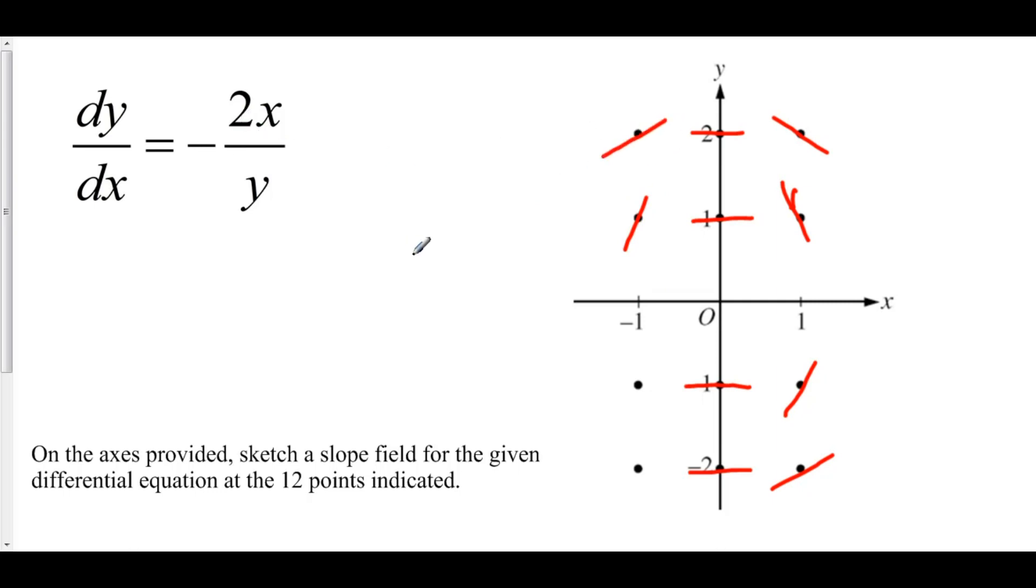Let's check out (-1, -1). That has a slope of negative 2. How about (-1, -2)? That has a slope of negative 1.